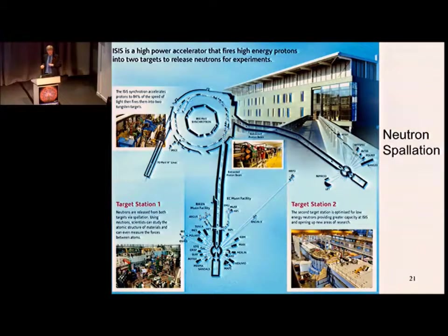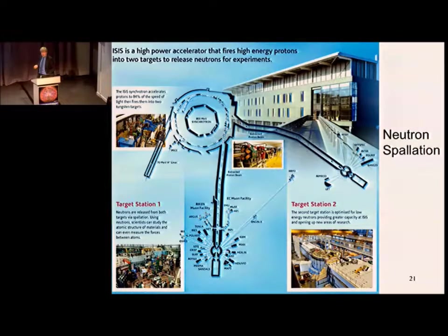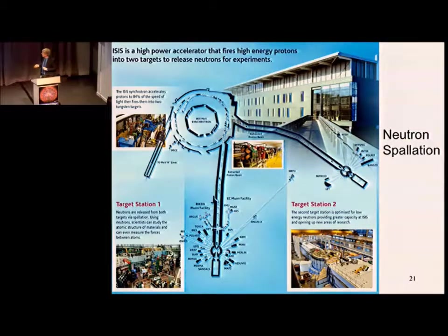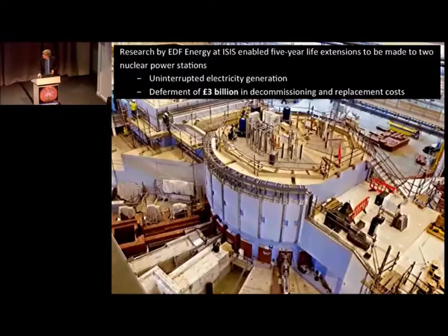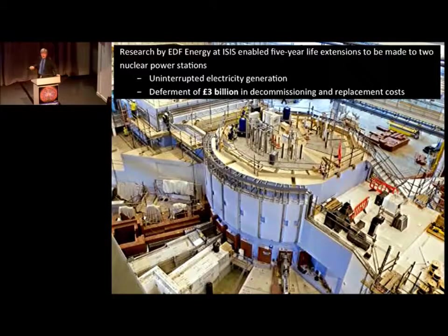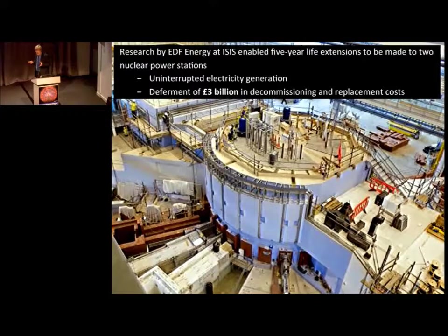Neutron scattering is complementary to what synchrotrons do. Some things overlap, but if you want to know particularly what hydrogen atoms are doing, neutron scattering is especially good. X-rays can tell you most of a complex molecule's structure, but where are the hydrogens and what are they doing? Neutrons can tell you that. Put the two together and you get these beautiful structures. Let me give one case study of why this is useful for the economy — nuclear power stations owned by EDF in the UK.